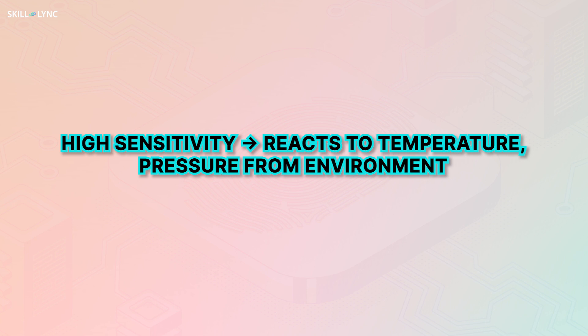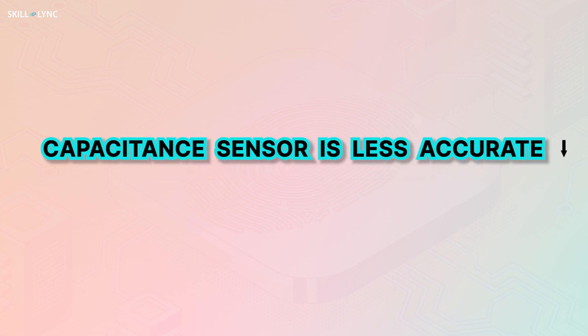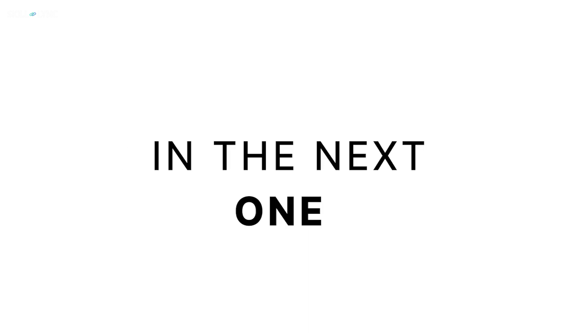Even after being so efficient, capacitance sensors have some disadvantages. Because of high sensitivity, they react to temperature and pressure from the environment, which affects performance. Capacitance sensors are also slightly less accurate than other types of sensors available. Well, that's about it for this video, guys. We'll see you again in the next one — until then, take care, bye!